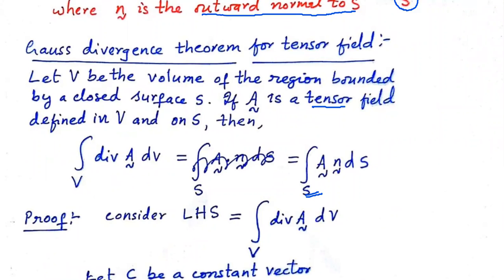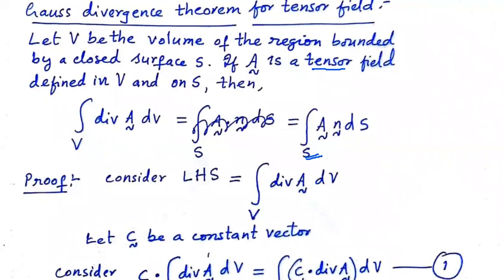We have to prove this theorem using the previous theorem. Let us take the LHS of the Gauss Divergence Theorem for a tensor field, which is the volume integral of the divergence of the tensor A dV. We take any constant vector C defined on the same volume V and on the surface S, and take the dot product with C.